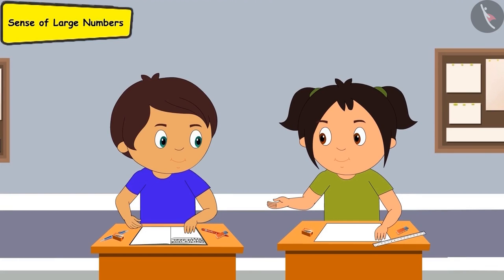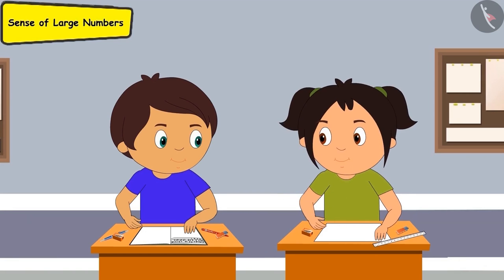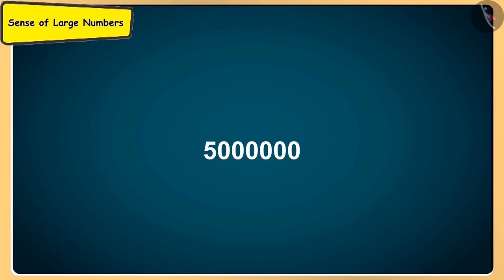Now, tell me, if we need to write 50 lakhs in the same manner, how do we write? At first, we write 50 lakhs in the table in correct order and then put a comma after the hundredths place. Yes, and after that, we will put a comma after 10,000.